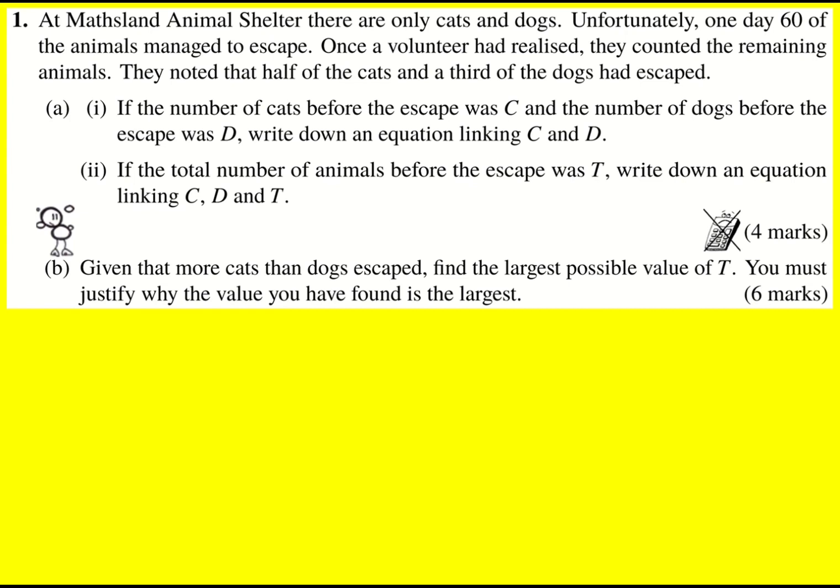Well, this is going to use this 60. On one day 60 of the animals managed to escape, and once a volunteer had realized, they counted the remaining animals and noted that half of the cats and a third of the dogs had escaped. So we can write down the total number of cats that escaped is one-half times C, where C was the original number, and the total number of dogs that escaped is one-third times D. Therefore, the total number of animals that escaped is these two added together, and that equals 60.